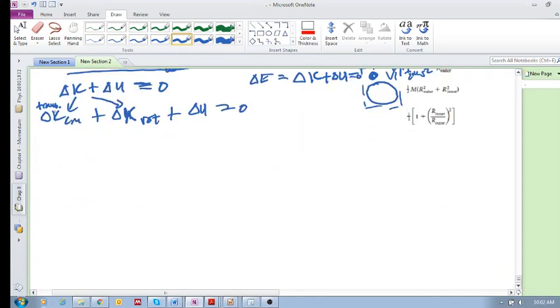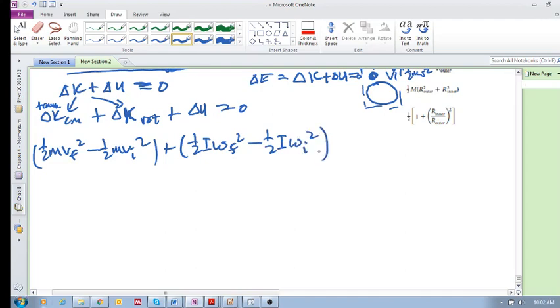What is delta K center of mass? It's half mv final squared minus half mv initial squared. What's delta K rotational? It's half I omega final squared minus half I omega initial squared. And then what is delta U? Delta U is plus mgh final minus mgh initial equal to zero.